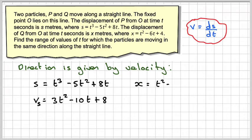Taking the second function, the displacement function, we get x equals t squared minus 6t plus 4. And if we differentiate that, we're going to get 2t minus 6.